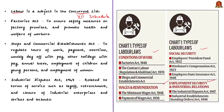Some important legislations include the Factories Act, the Shops and Commercial Establishments Act, and the Industrial Employment Act. The Factories Act is to ensure safety measures on factory premises and to promote health and welfare of workers. The Shops and Commercial Establishments Act aims to regulate working hours, payment, overtime, weekly day off with pay, holidays, annual leave, employment of children, young persons, and women. The most contentious labor law is the Industrial Disputes Act of 1947.